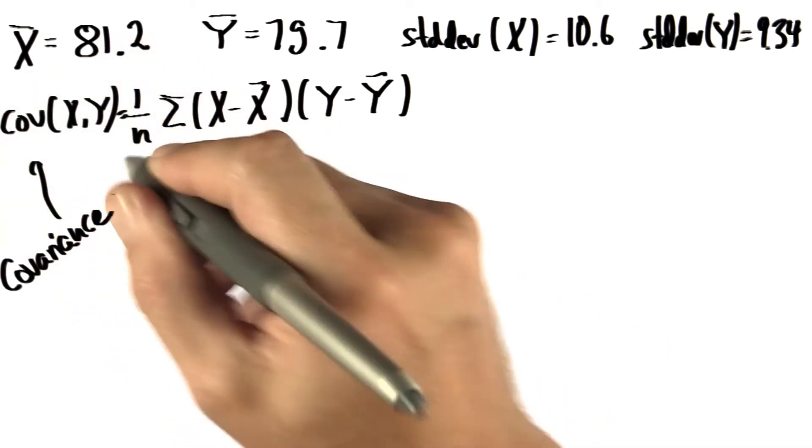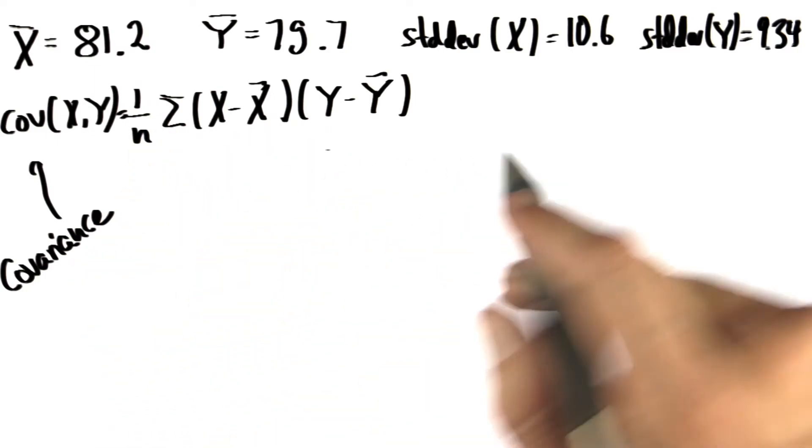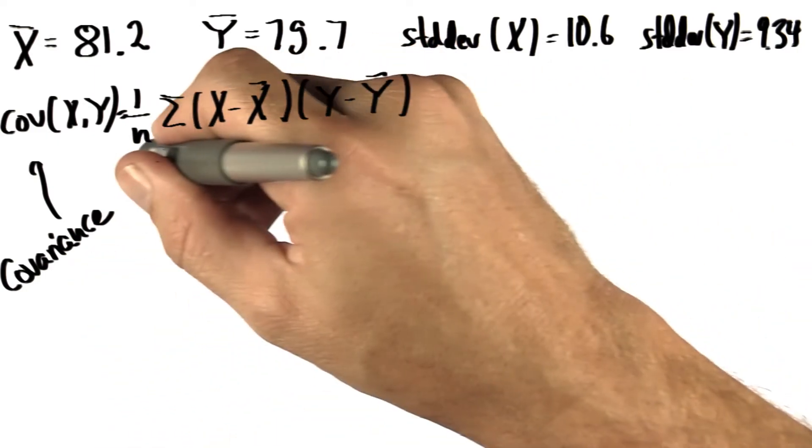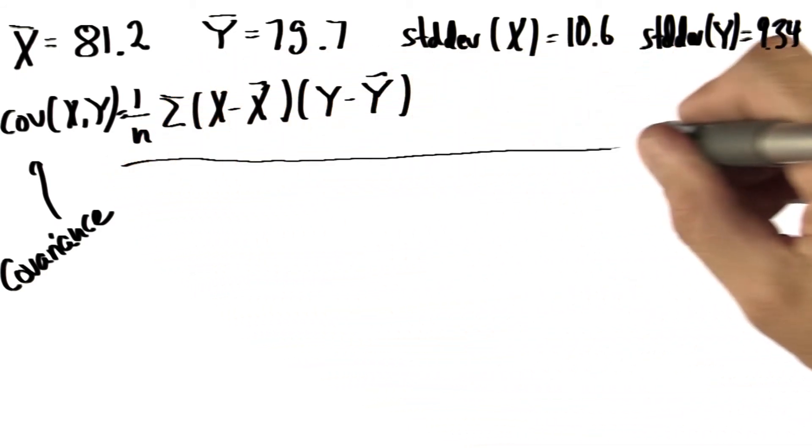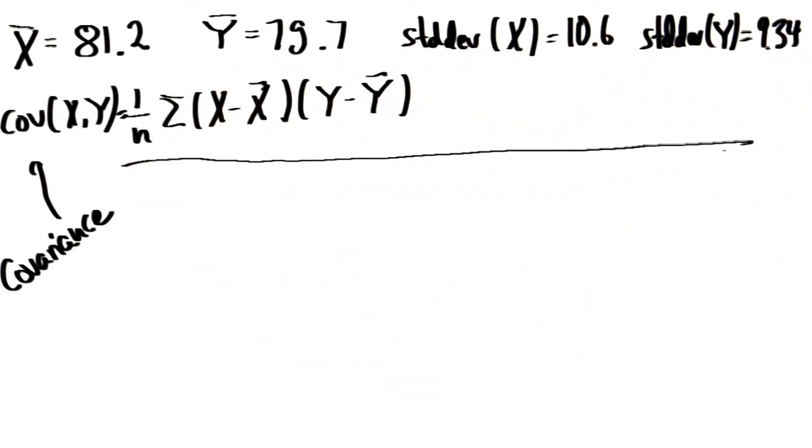We call this a covariance, or cov, between two variables x and y. In our example, the numerical value for the covariance is 75.36.